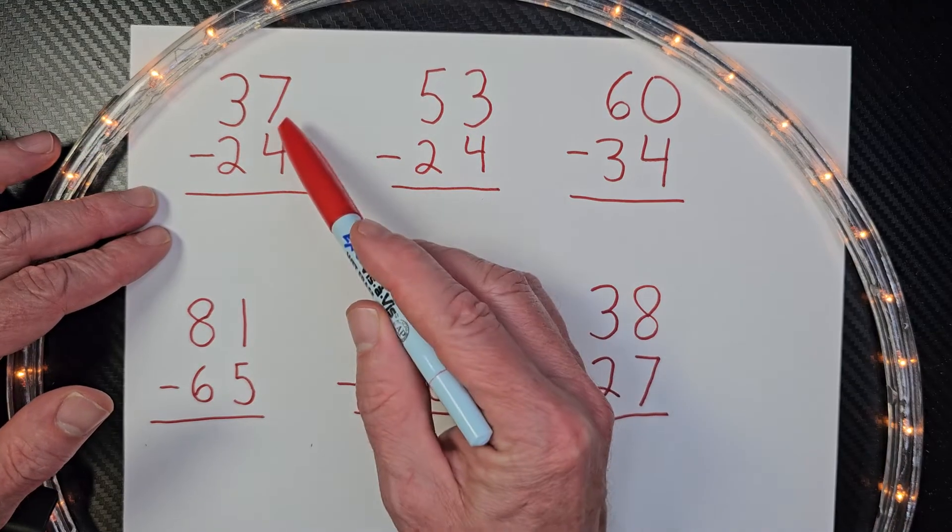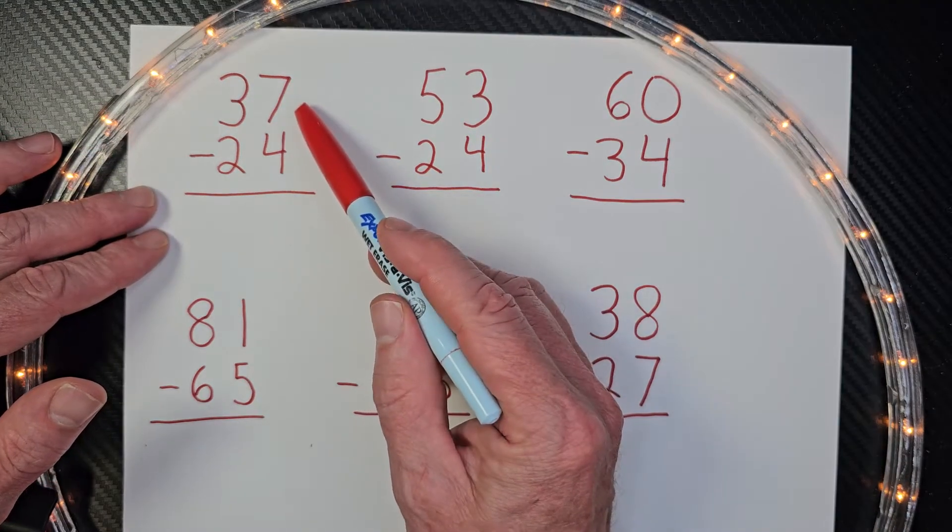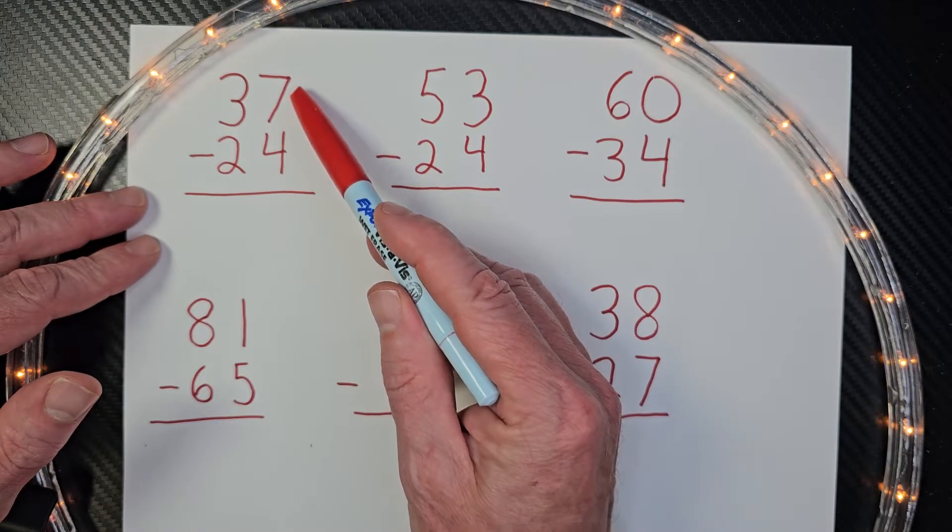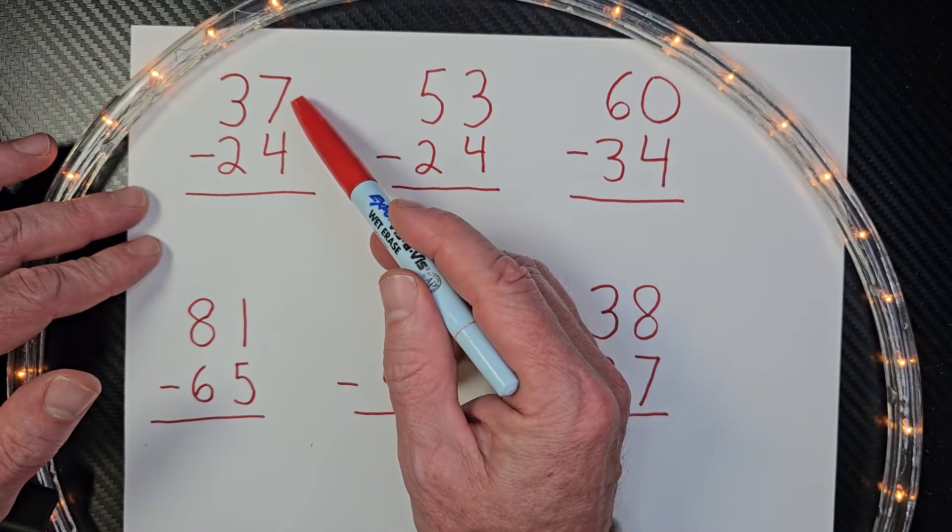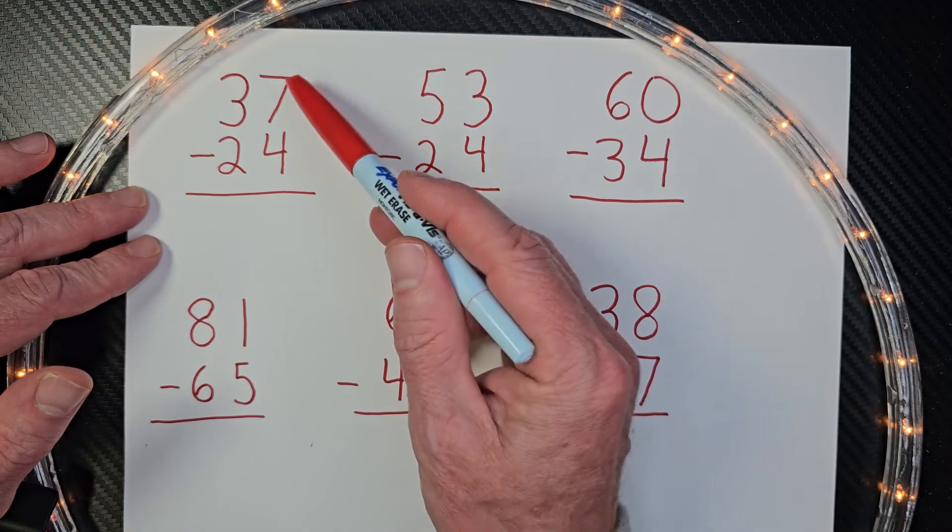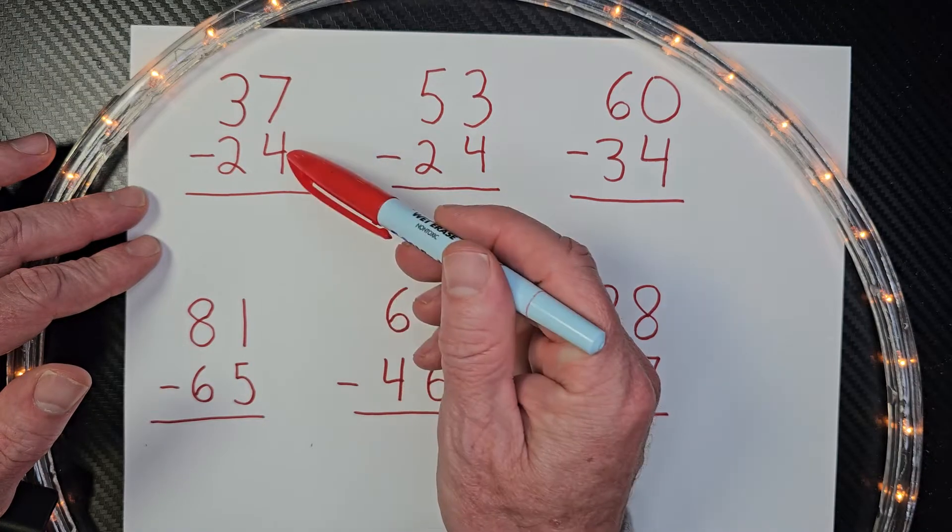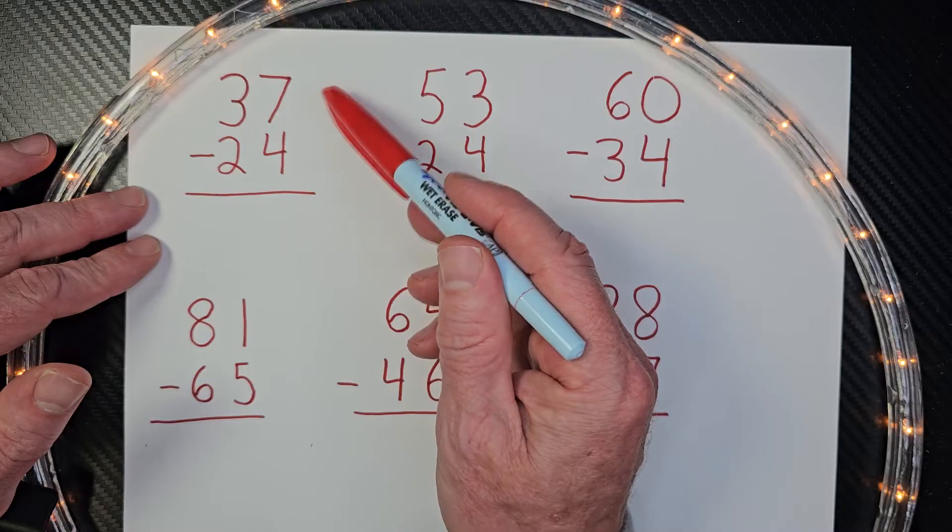Let's go ahead and do the first problem right here. First, what you want to do is subtract the ones. And when you look at the ones, you've got to see if we need to do any type of regrouping. If this number right here is bigger than the bottom number, we don't need to regroup.